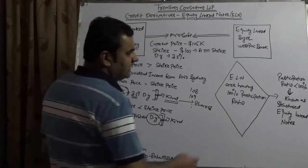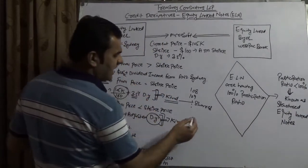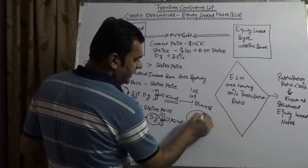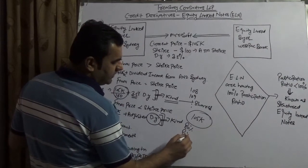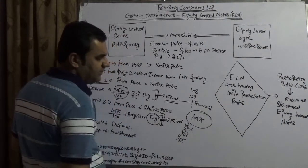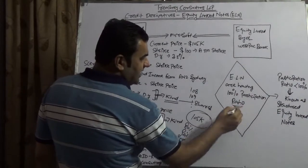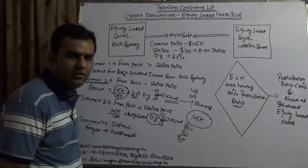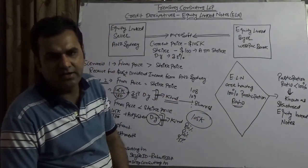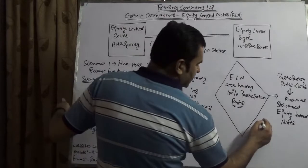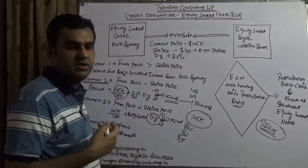Do not forget that equity-linked notes have a participation ratio of 100 percent. Why 100 percent? Because in all cases I am referring to 105K completely — I am not referring to 80, 90, or 95 percent of that. When the participation ratio varies from bank to bank, that structure is known as structured equity-linked notes, or SELN.